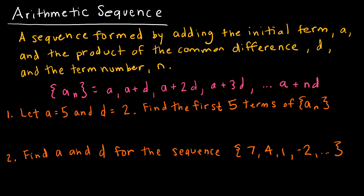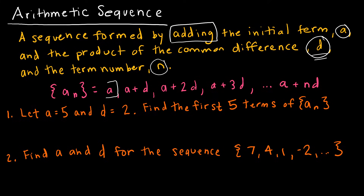We're going to look at two types of sequences in this video. The first is the arithmetic sequence, which is formed by adding a common difference d starting with some initial term a. We keep adding that common difference n times. So my first term is a, to get the next term I add d, then add d again — or equivalently I've added 2d to the initial term — then 3d, and we can see the pattern continues with n d's added to the original.